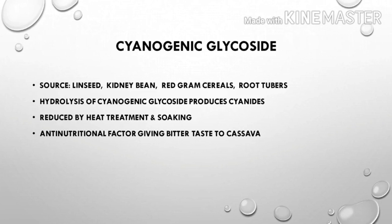Next is cyanogenic glycosides. Sources include linseed, kidney bean, red gram cereals, and root tubers. Upon hydrolysis, cyanogenic glycosides produce cyanide, which is toxic.